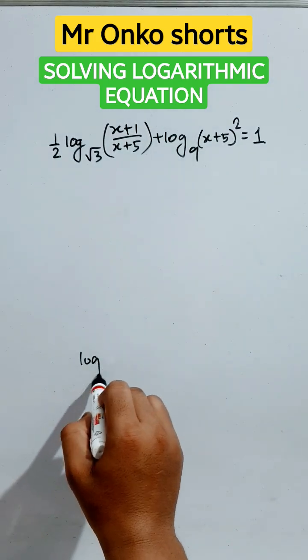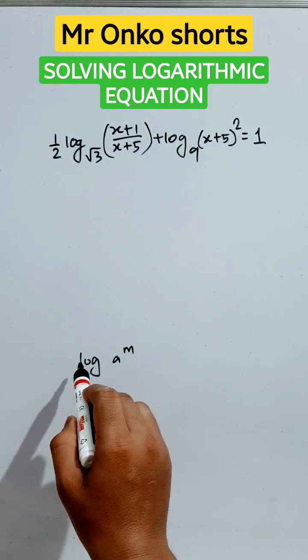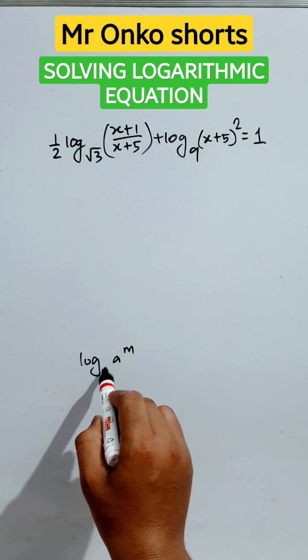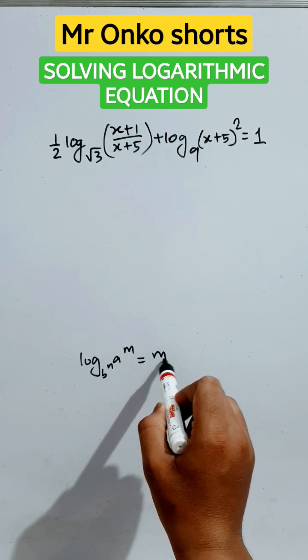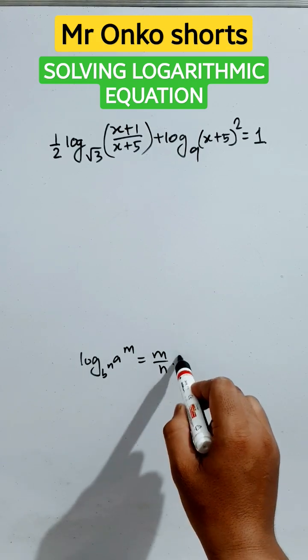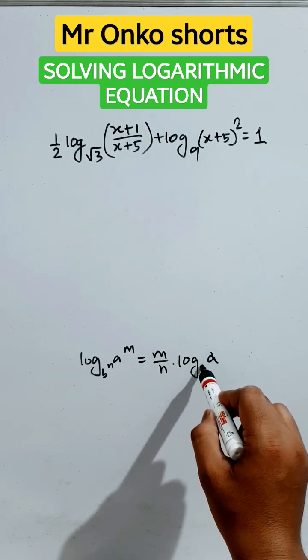First apply this trick here. Logarithm of a to the power m to the base b to the power n can be written in short form as m by n into logarithm of a to the base b.